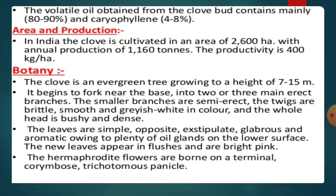The clove is an evergreen tree growing to a height of 7 to 15 meters. It begins to fork near the base into two or three main erect branches, and the smaller branches are semi-erect. The bark is brittle, smooth, and grayish-white, and the whole head is bushy and dense. The leaves are simple, opposite, exstipulate, glabrous, and aromatic, owing to plenty of oil glands on the lower surface.